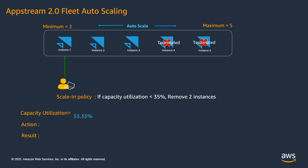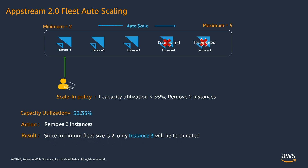Now the new capacity utilization is at 33.33%. This will again trigger the scale-in policy because the capacity utilization is still less than 35%, which is supposed to remove 2 more instances. But since we defined the minimum fleet size to 2 instances, only 1 instance will be removed. You can see instance 3 being terminated from the fleet. This is how a scale-in policy works.